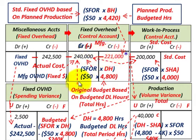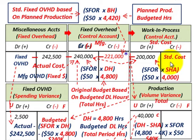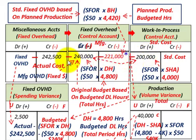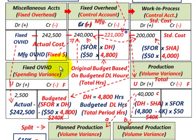We have a difference between our original budgeted amount for total direct labor hours versus planned production. Moving into work-in-process at standard cost, that's $50 per hour times the standard hours allowed of 4,000 hours, giving us $200,000 in work-in-process. So we have a difference between standard cost of $200,000 and actual cost of $242,500, which is where our variances come from.